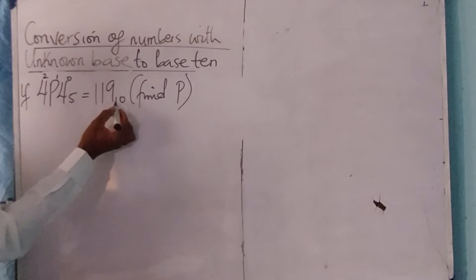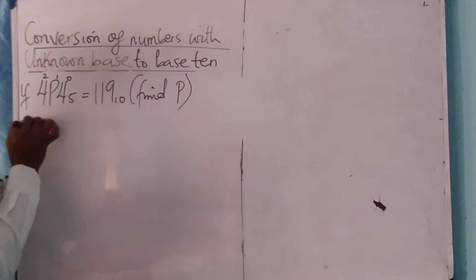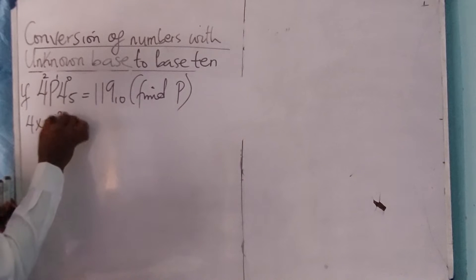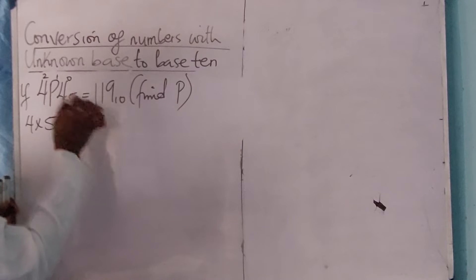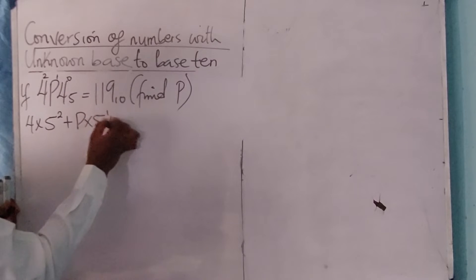This time is already in base 10, so this is 4 times 5 raised to power 2, plus P times 5 raised to power 1, plus 4 times 5 raised to power 0 equals 119.